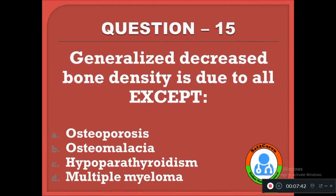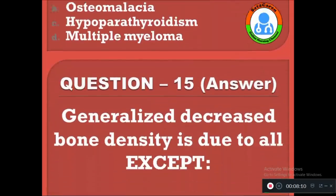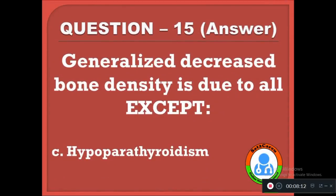Question 15: Generalized decreased bone density is due to all except — option A: osteoporosis, B: osteomalacia, C: hypoparathyroidism, D: multiple myeloma. The correct answer is C. Osteoporosis, osteomalacia, and multiple myeloma all cause generalized decreased bone density, but hypoparathyroidism does not. However, hyperparathyroidism does cause generalized decreased bone density.